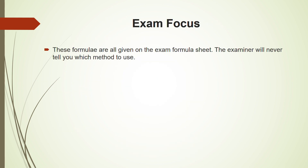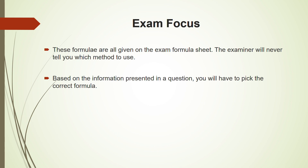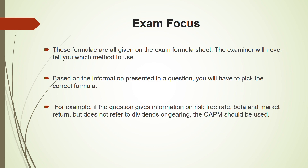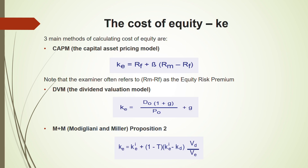All three formulas are given in the formula sheet. Remember: the examiner will never tell you which method to use to find cost of equity — it is up to you. You determine this based on the information given. If the question gives risk-free rate, beta, and market return, use CAPM. If there is no reference to dividends, you cannot use DVM. If gearing is not mentioned, you cannot use MM Proposition 2. So if no dividend and no gearing information is given, it must be CAPM.